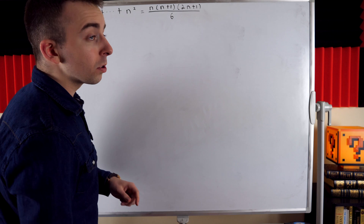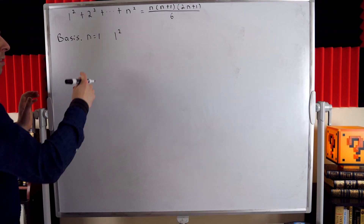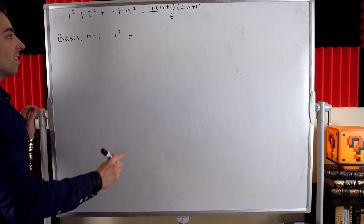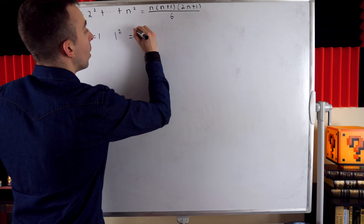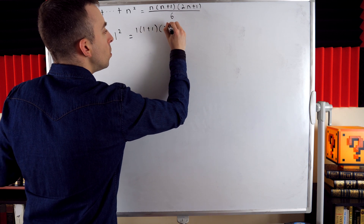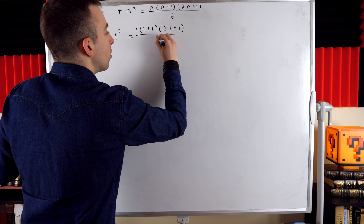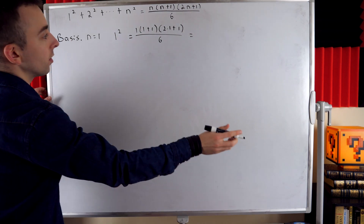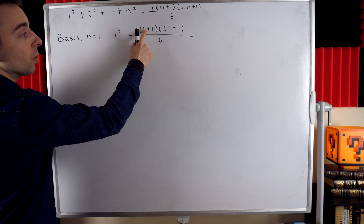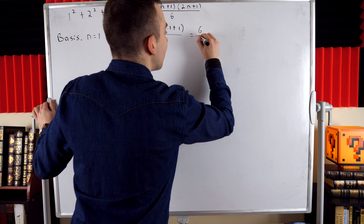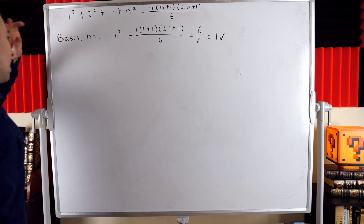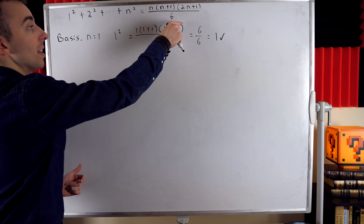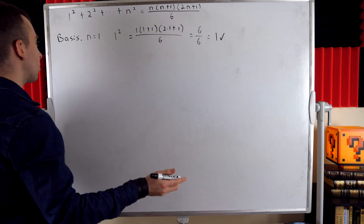We just want to verify that this holds when n equals 1. So 1 squared should equal 1 times 1 plus 1 times 2 times 1 plus 1, all over 6 — that's just substituting 1 in for n. 1 squared is 1, and the right side is 1 times 2 times 3 over 6, which is 6 over 6 — indeed equal to 1. So we've verified the formula for n equals 1.